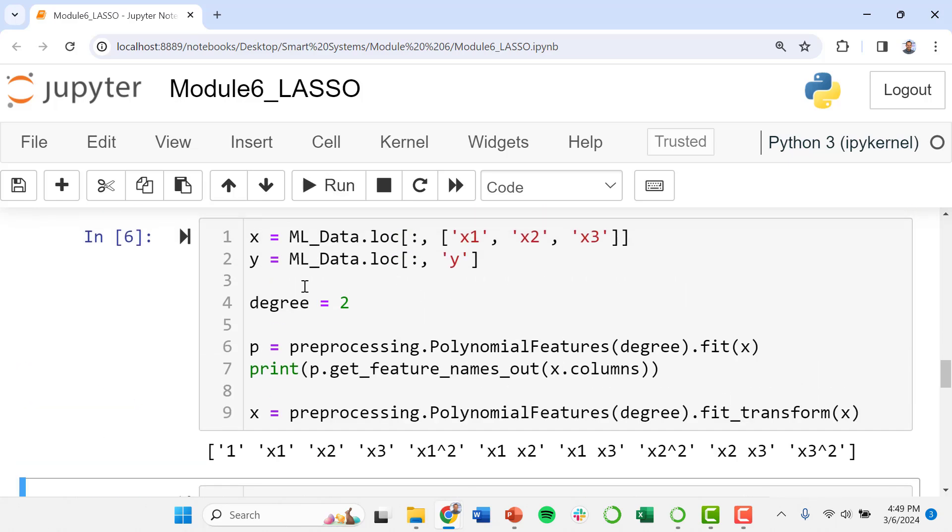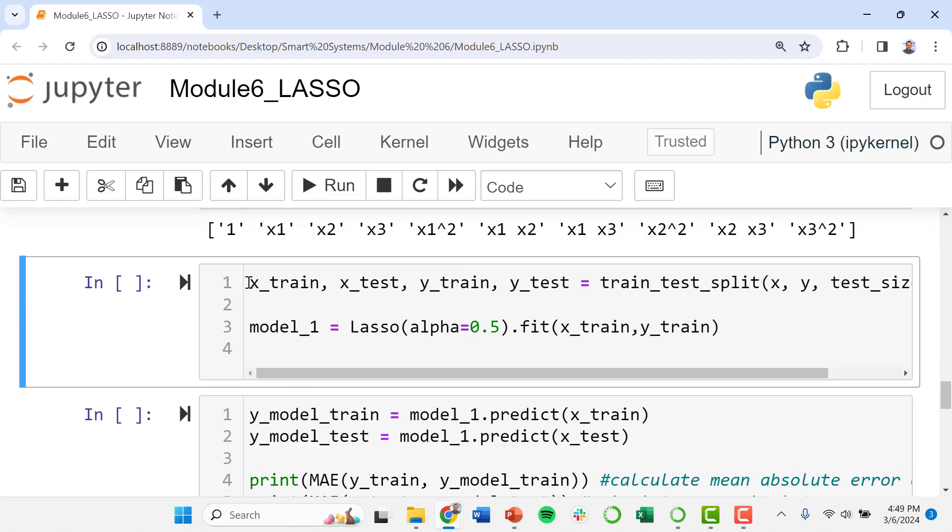We're going to keep this simpler and just do a second degree polynomial. In the world of machine learning, I would say a general rule of thumb is that simpler is better. If you have a model with fewer features and requires fewer inputs but it still produces an adequate level of accuracy, you should probably go with that model.